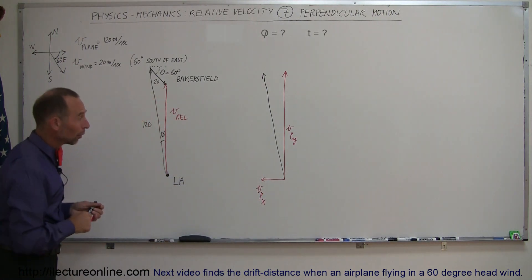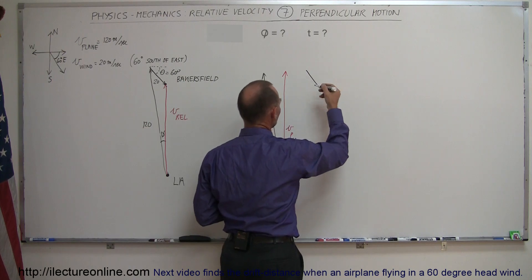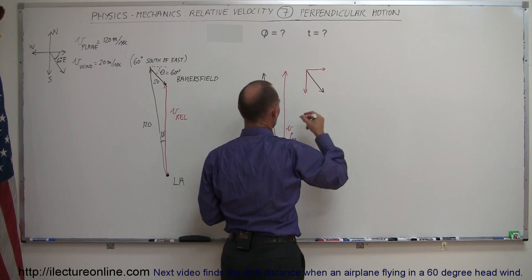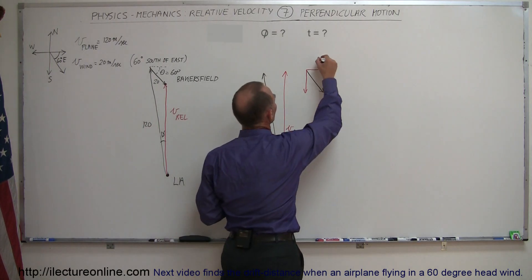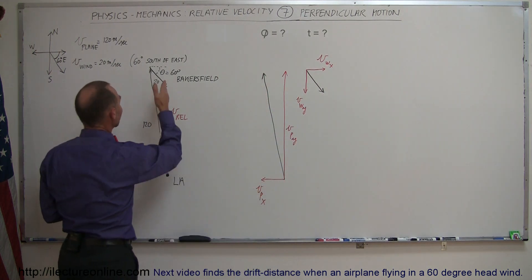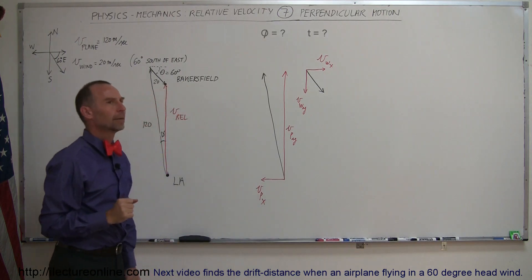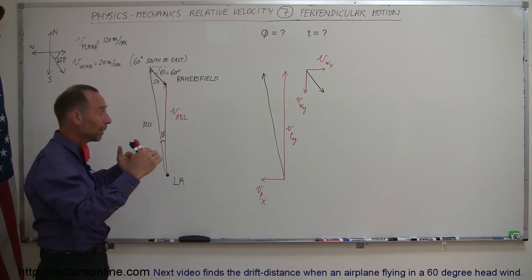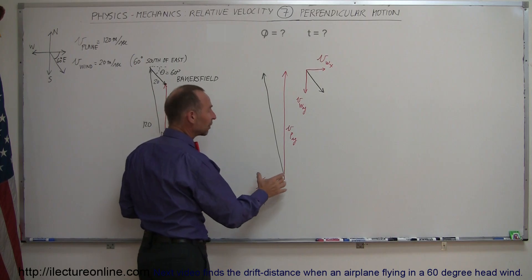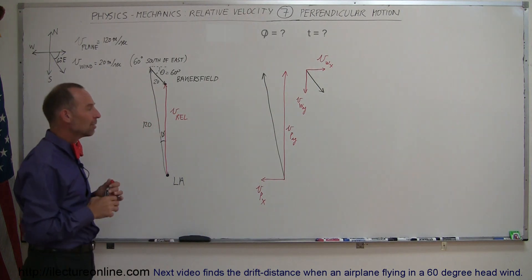We can also draw the wind vector, which is shorter at 20 meters per second, and it also has a horizontal and a vertical component — the velocity of the wind in the x-direction and in the y-direction. For the pilot to end up directly north, the plane's x-component and the wind's x-component must be equal and opposite, canceling each other out.